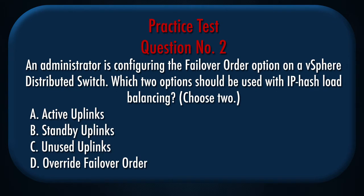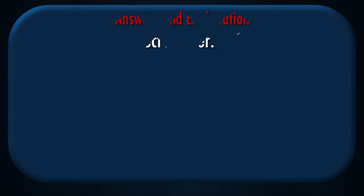Question number 2. An administrator is configuring the failover order option on a vSphere Distributed Switch. Which two options should be used with IP hash load balancing? Choose two. A. Active uplinks. B. Standby uplinks. C. Unused uplinks. D. Override failover order. Correct answer: A, C.